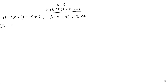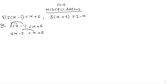For the first inequality, 2(x - 1) less than x + 5. We multiply out: 2x minus 2, less than x + 5. Bringing x to the left side: 2x minus x, and moving constants to the right side: 5 plus 2. So we get x less than 7.